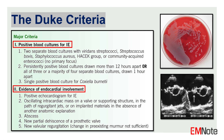Major criteria include: 1. Positive blood cultures for IE pathogens; 2. Evidence of endocardial involvement on echocardiography, such as vegetations, abscess, or new valvular regurgitation.